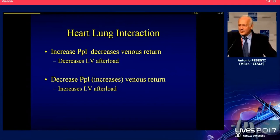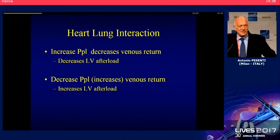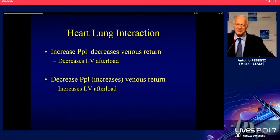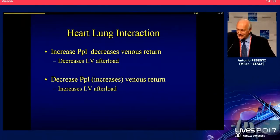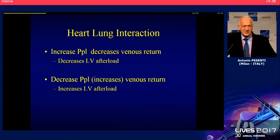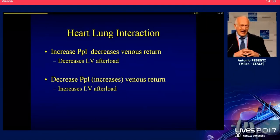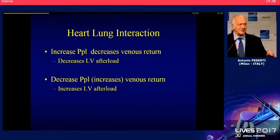We have heard that increased pleural pressure decreases venous return. This is a fact. The mechanism is sometimes debated, but the fact is that if we increase intrathoracic pressure, venous return decreases. A decrease in pleural pressure should increase venous return up to a certain point, because if you suck through a collapsible tube, the tube might collapse if you suck too hard.